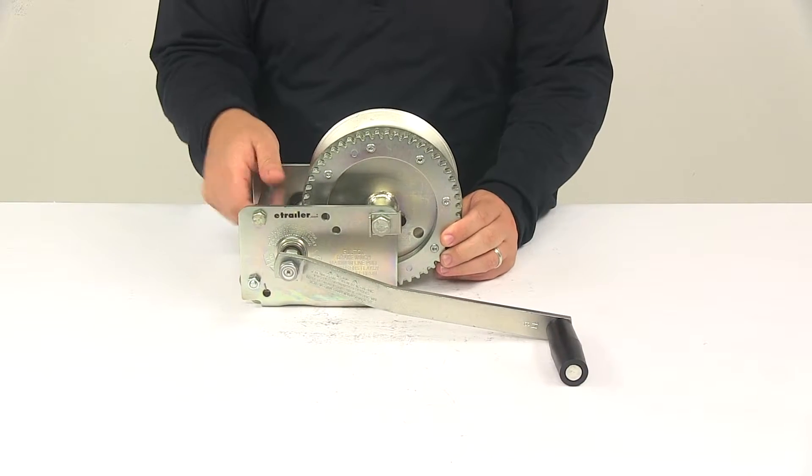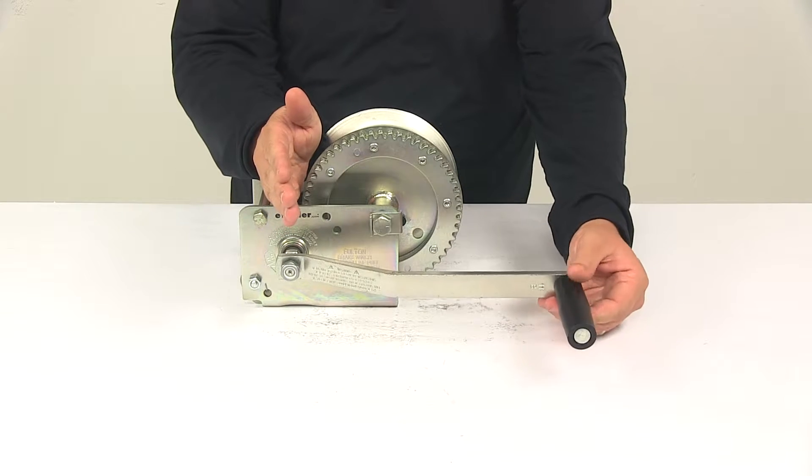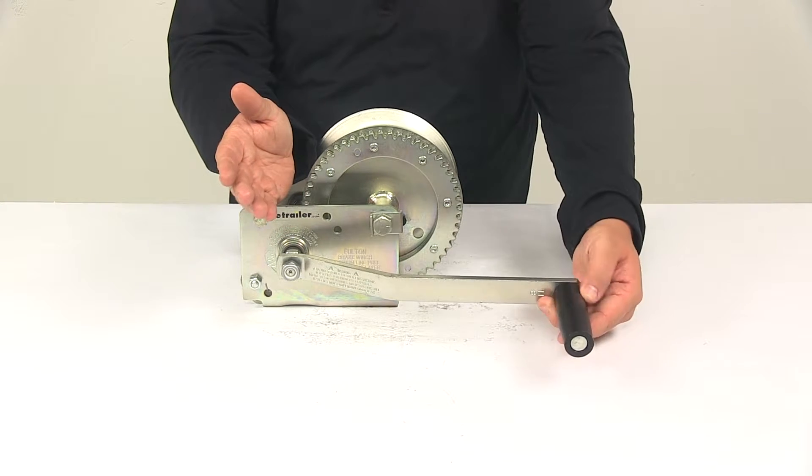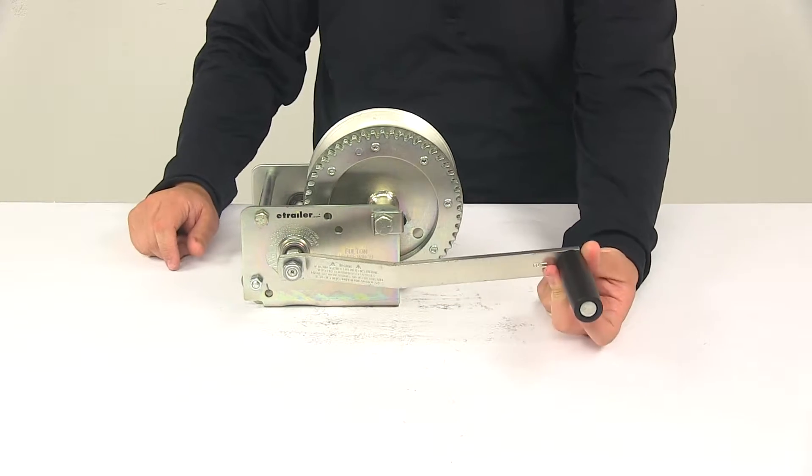When it comes to the handle length, measuring from the center of where it mounts to the center of the hand grip area, it's about 11 inches long. The hand grip area does rotate for an easy grip design.